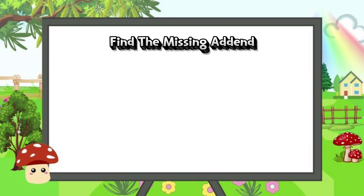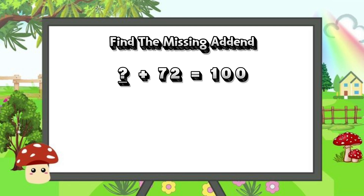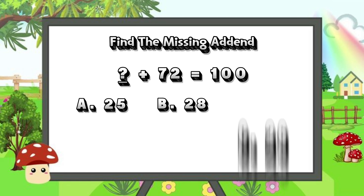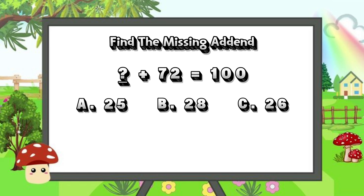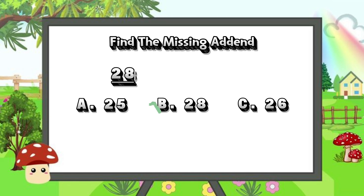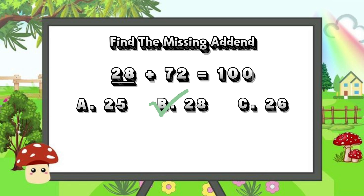Now, let's find the missing addend. Blank plus 72 is equals to 100. Is it letter A, 25? Letter B, 28? Or is it letter C, 26? And the correct answer is letter B, 28. 28 plus 72 is equals to 100.